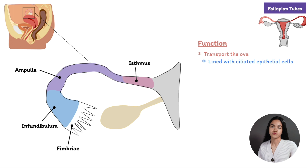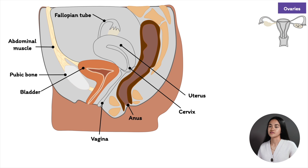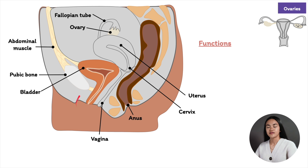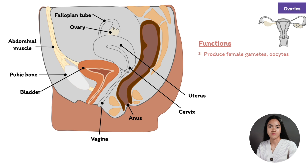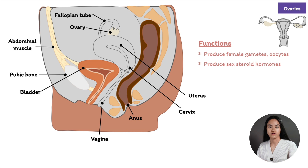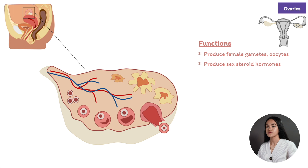The next organs are the ovaries — the female gonads. The ovaries are paired, almond-sized organs located in the upper pelvic cavity, with one on each side of the uterus. The ends of the uterine tubes are not directly attached to the ovaries. The main functions of the ovaries are to produce female gametes (oocytes) and to synthesize sex steroid hormones — estrogen and progesterone.